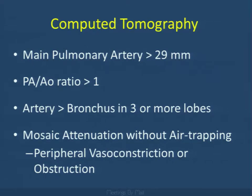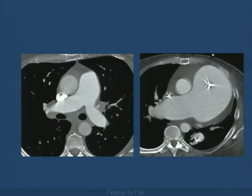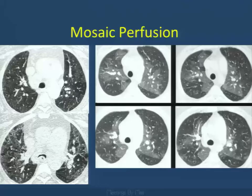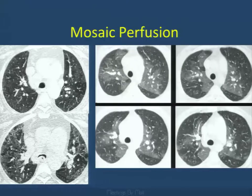As a radiology community, we may see the main pulmonary artery enlarged greater than 29 millimeters. We can use the PA to aorta ratio of greater than one. The pulmonary artery is larger than the bronchial size in at least three or more lobes. We may also see mosaic attenuation without any air trapping, which represents peripheral vasoconstriction and may indicate chronic pulmonary arterial hypertension.